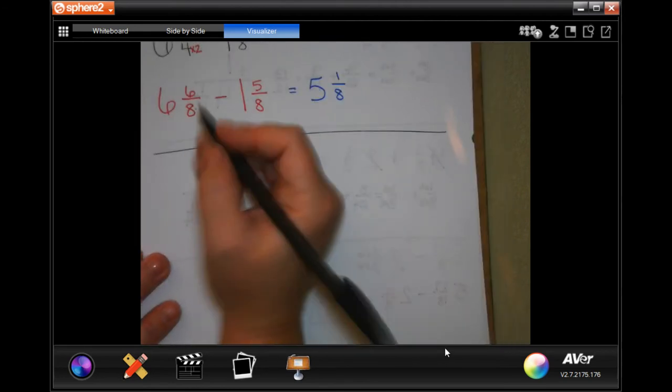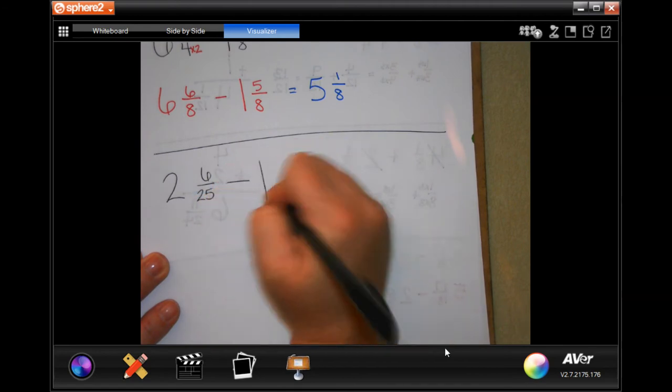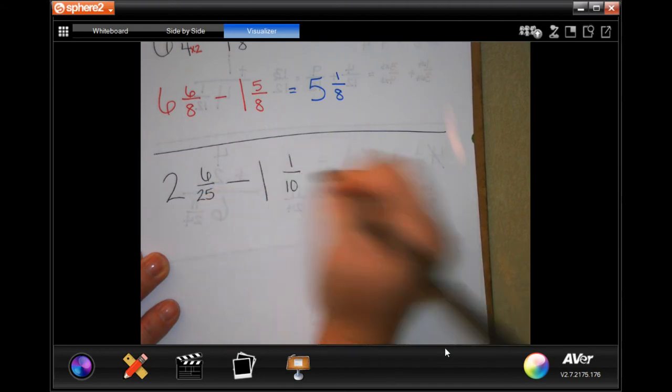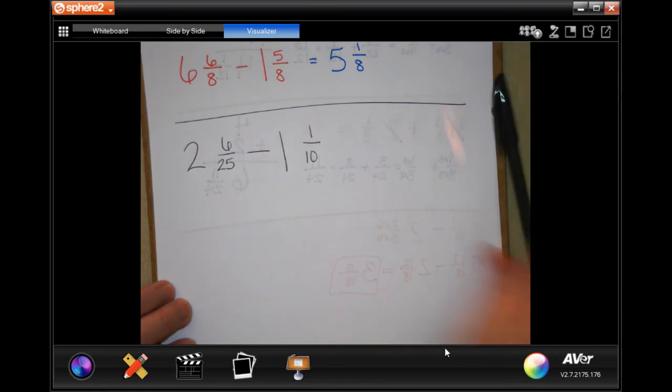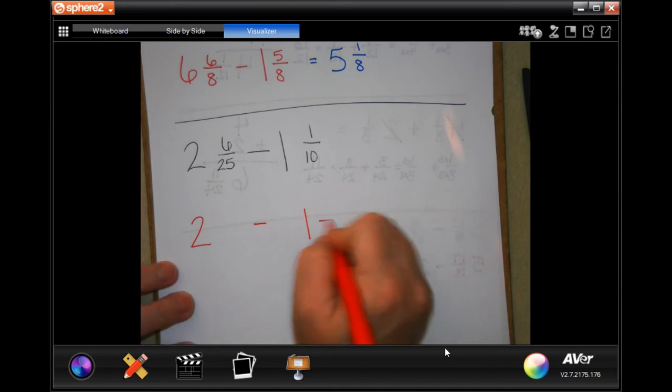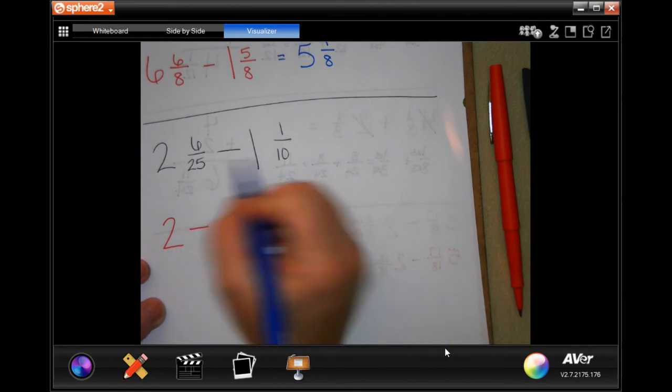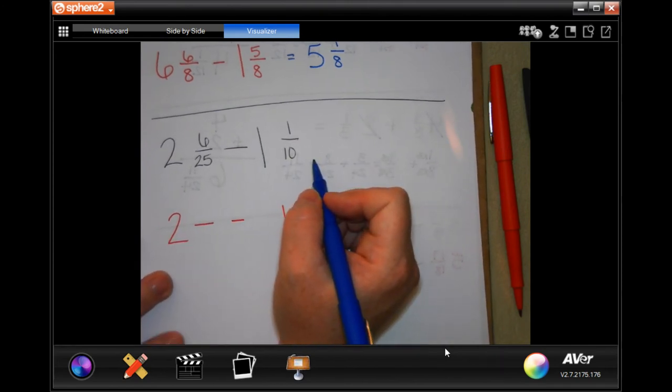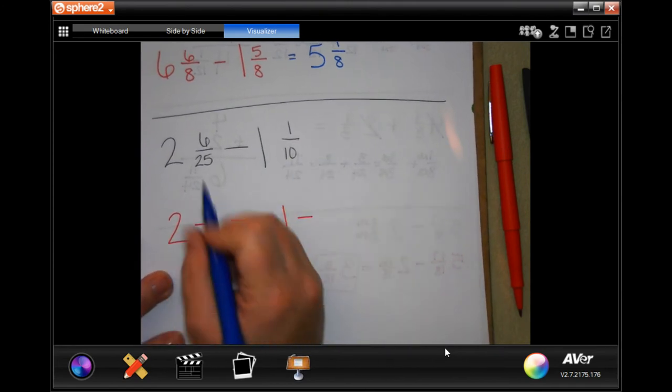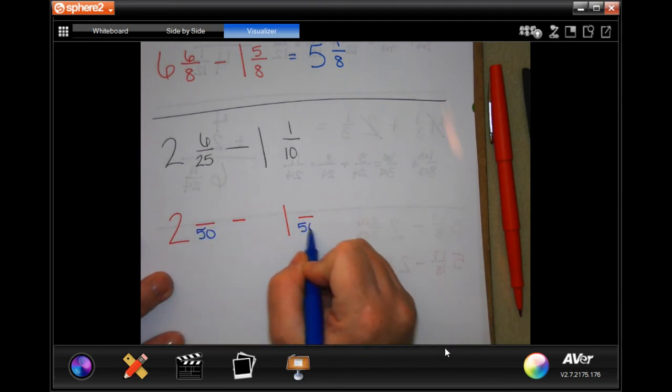So let's go ahead and do 12 together. So 2 and 6 over 25 minus 1 and 1/10. Remember, our whole numbers are going to stay the same. It's only our denominators that are going to change. The smallest number that 25 and 10 go into is going to be 50. So this one I can just rewrite. Our whole number is not going to change. Now remember, like two quarters is 50 cents.